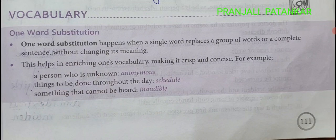Then vocabulary: One word substitution. When a single word replaces a group of words or a complete sentence. For example: a person who is unknown — Anonymous. Things to be done throughout the day — Schedule. Something that cannot be heard — Inaudible.